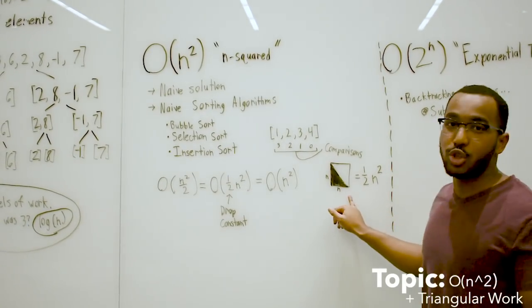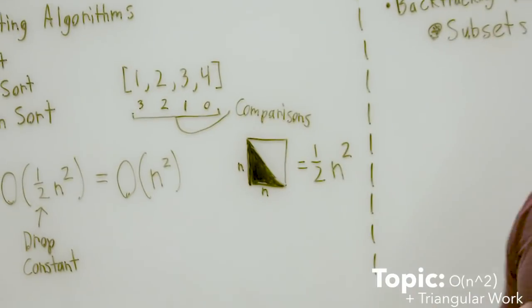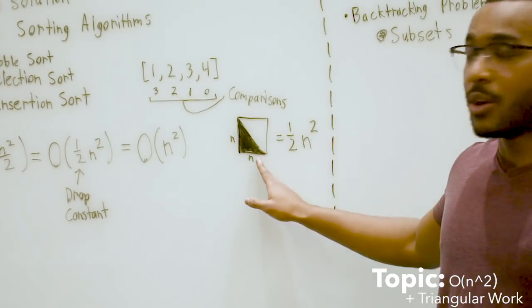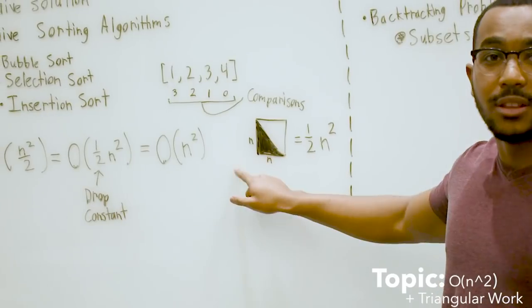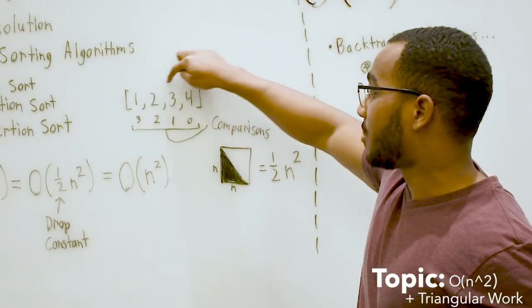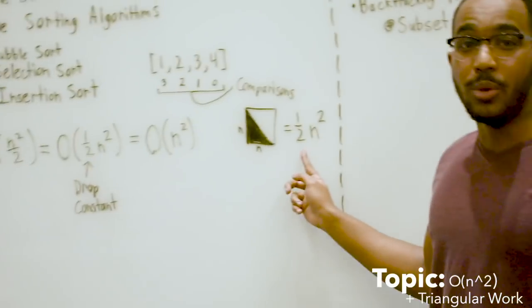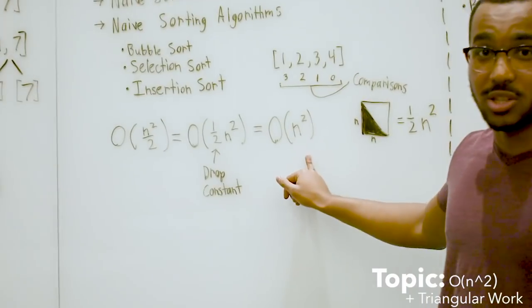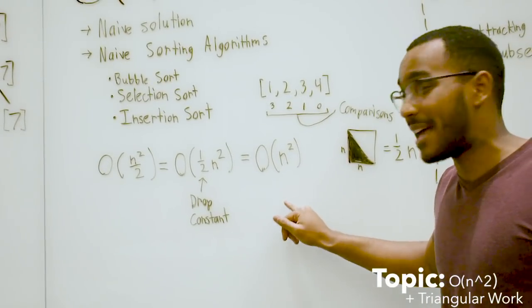What this triangle is cut out of is a square. What is the square from? We have n by n, that's n squared. We're taking one half of it. Even if we're doing something like this and taking one half n squared, what do we notice? There's a constant right there. And what do we do with constants? We drop constants because the behavior stays n squared.